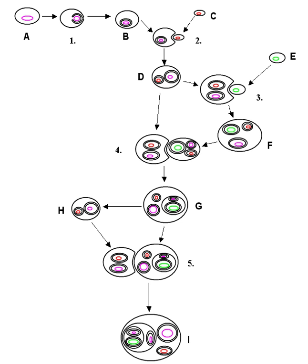Paramecium bursaria, a species of ciliate, has a mutualistic symbiotic relationship with green alga called Zoochlorella. The algae live inside the cell, in the cytoplasm.